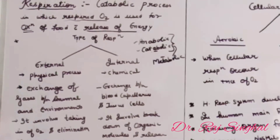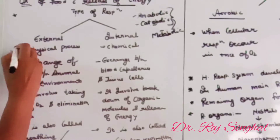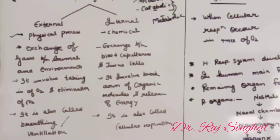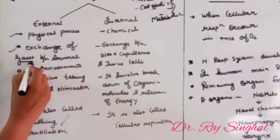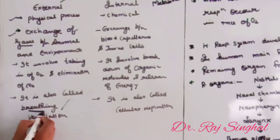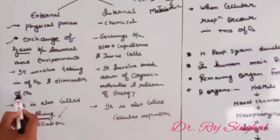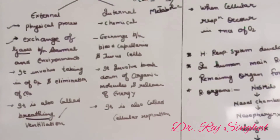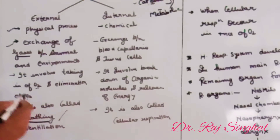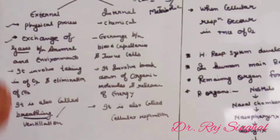Respiration is of two types: external and internal. External respiration is a physical process, meaning no chemical reaction occurs in it. It simply involves the exchange of gases between the animal and the environment. In other words, it is breathing — it involves taking in oxygen and elimination of carbon dioxide. No chemical reaction occurs in this, so it is external respiration.